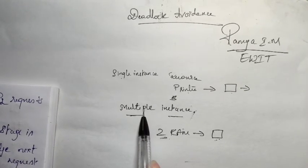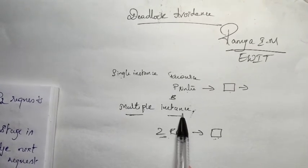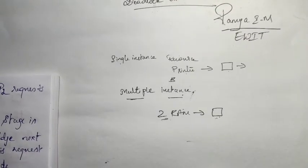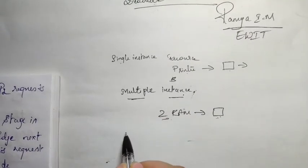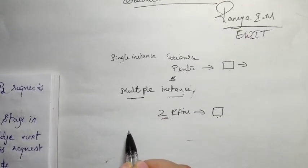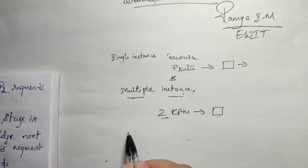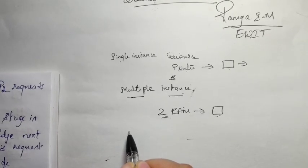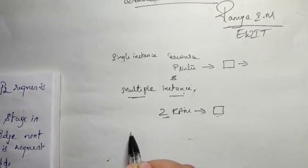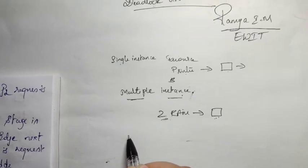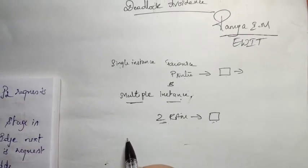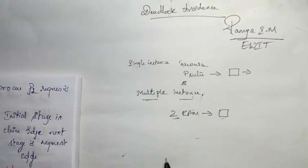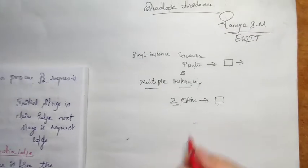In deadlock avoidance, the first approach is the Resource Allocation Graph algorithm. If the resource contains a single instance, then we can use this Resource Allocation Graph algorithm.